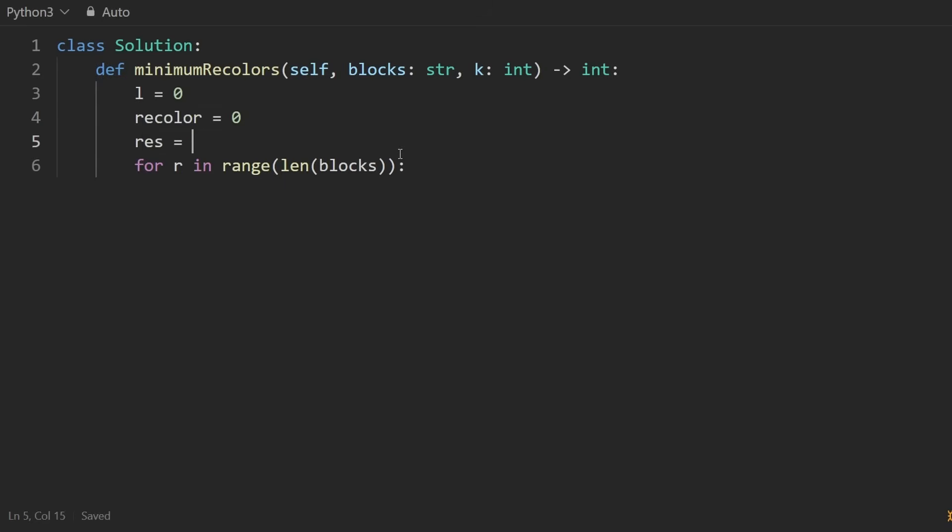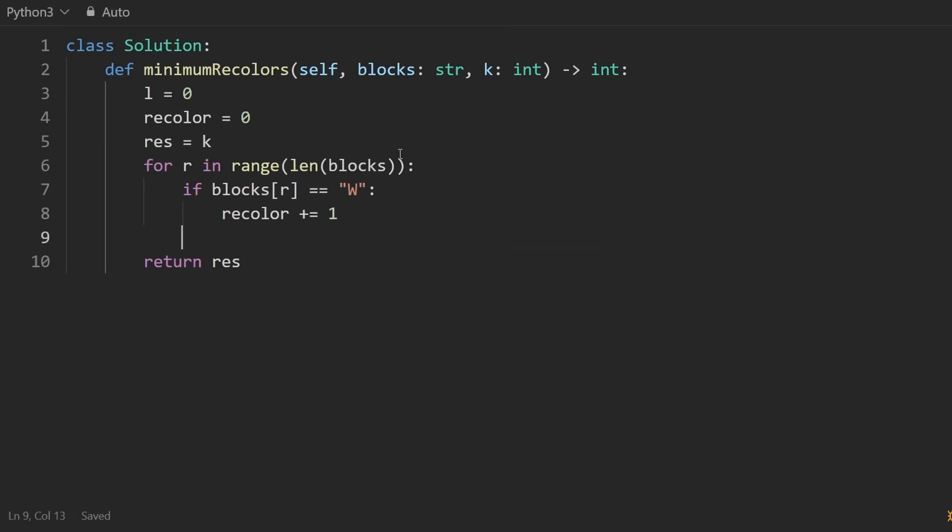And now if I see a white at index r, then I'm going to increment my number of recolors. If the window is big enough, so if right minus left plus one, that's the size of the window, is equal to k, then we do something different.